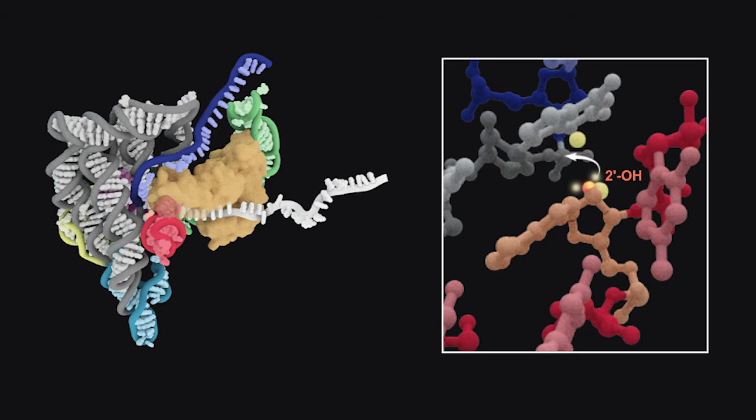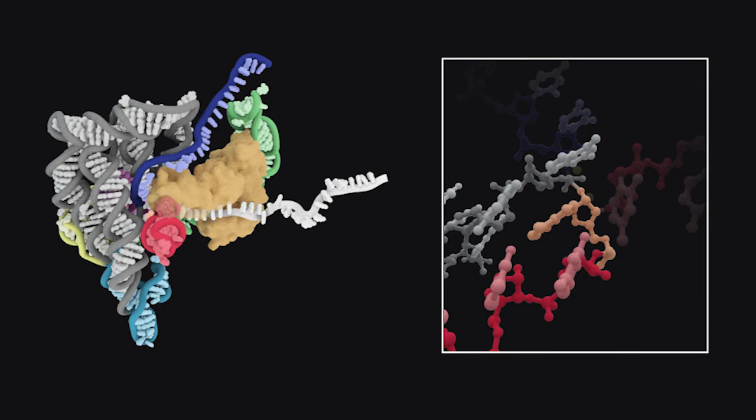The intron splices the 5' exon through branching via a nucleophilic attack, creating a lariat in the RNA.